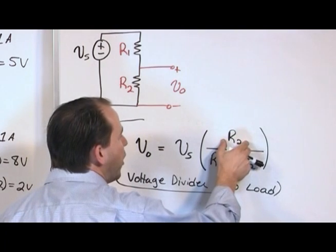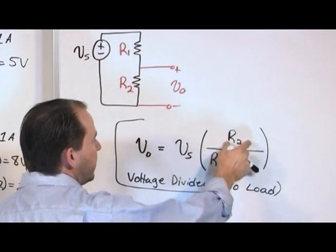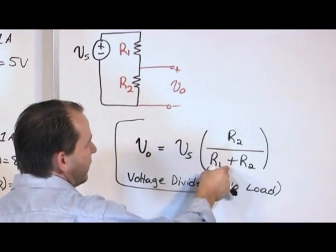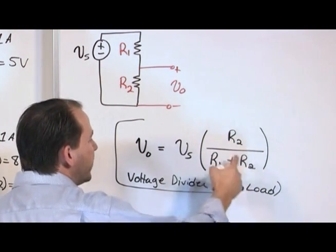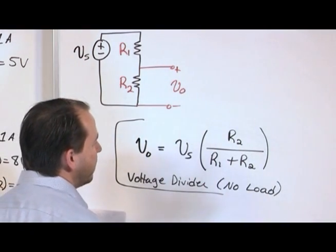But if R2 is very large, it's going to be a number very close to one. Because if this is one million, and then this is one million, and this is like one ohm, then it's going to be one million divided by one million and one. So you're going to get very high, you're going to get 0.999 something.